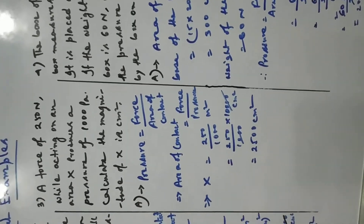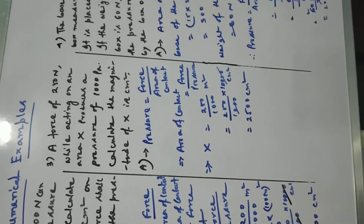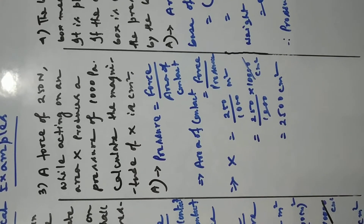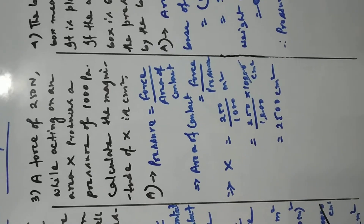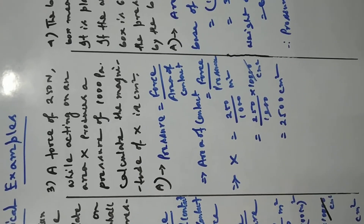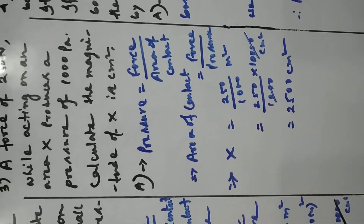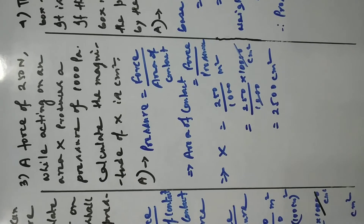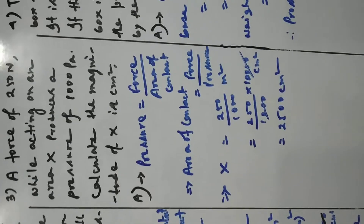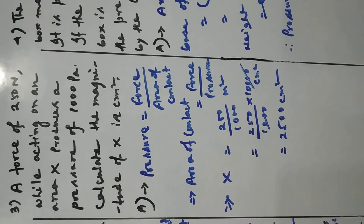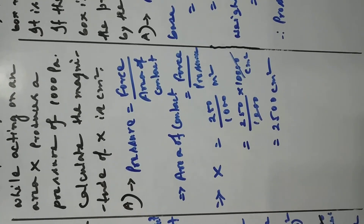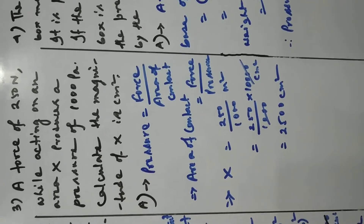The force is given in Newton and the pressure is given in Pascal — both are in SI units — so after calculation we find the area in SI units, which is meter square. We got 250 by 1000 meter square. We then convert meter square into centimeter square by multiplying by 10,000, giving 2,500 centimeter square.